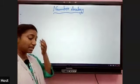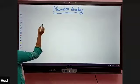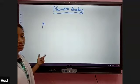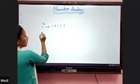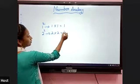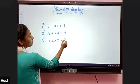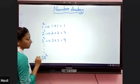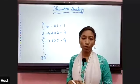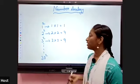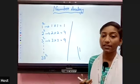Before doing number analogy or number classification, you must know the squares and cubes. If the power is 2, it is called a square. 1 square is 1×1=1, 2 square is 2×2=4, 3 square is 3×3=9. You should know up to 30 squares, because you can easily solve problems regarding number analogy or number classification.